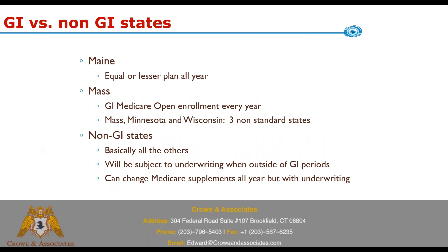In Maine, the rule is you can move without underwriting to a plan of equal or lesser benefits all year, so if they get a big rate increase they can move to somebody else with the same benefits. In Massachusetts, they must have one guaranteed issue open enrollment period every year. Massachusetts, Minnesota, and Wisconsin are your three non-standardized supplement states — they don't follow the standard Plan F, G, N rules; they have their own supplement structures.